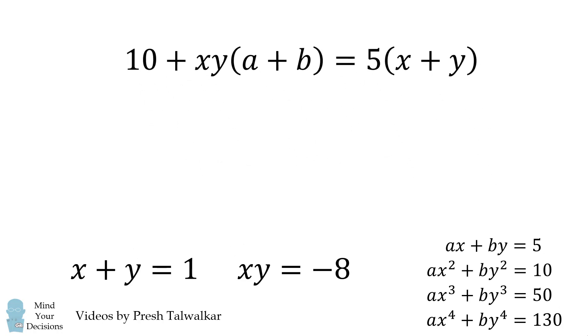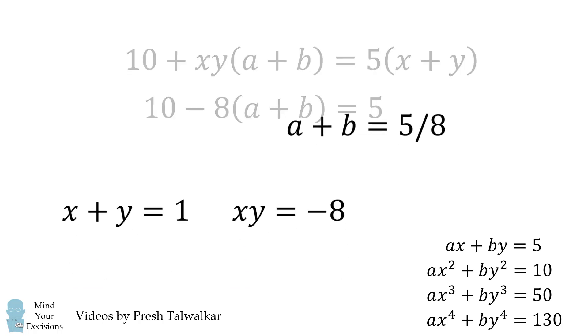This equation, we can use the information we've already derived. Here, xy is equal to negative 8, and x plus y is equal to 1. We substitute those in, and that'll allow us to solve for a plus b, and we'll get a plus b is equal to 5 over 8.